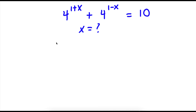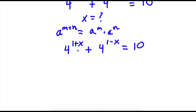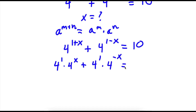First off, if we have something in the form a to the power of m plus n, this is equal to a to the power of m times a to the power of n. So for 4 to the power of 1 plus x, plus 4 to the power of 1 minus x, I'm going to use this property for both terms. This gives us 4 to the power of 1 times 4 to the power of x, plus 4 to the power of 1 times 4 to the power of negative x, equal to 10.